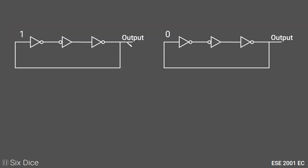Let's take two cases. Case one: output is one. The NOT gate performs a NOT operation giving us zero. We feed this input to our buffer with a bubble, so zero becomes one. The buffer adds a time delay and gives an output of one. Then the last NOT gate inverts one, so output becomes zero. The output changed from one to zero.